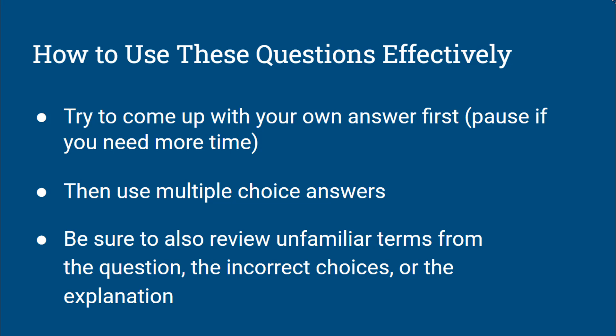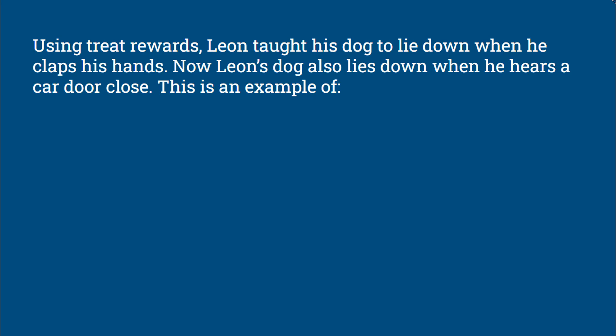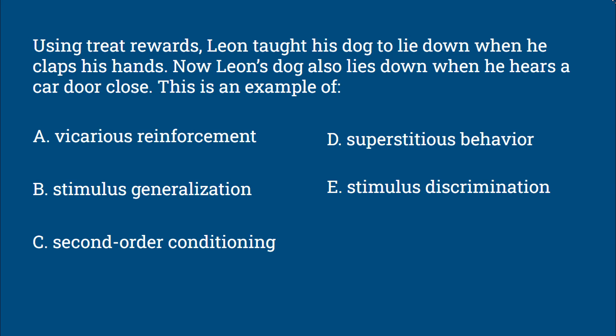Okay, let's look at these multiple choice questions for learning theory and behaviorism. Question 1: Using treat rewards, Leon taught his dog to lie down when he claps his hands. Now Leon's dog also lies down when he hears a car door close. This is an example of — is this vicarious reinforcement, stimulus generalization, second-order conditioning, superstitious behavior, or stimulus discrimination?